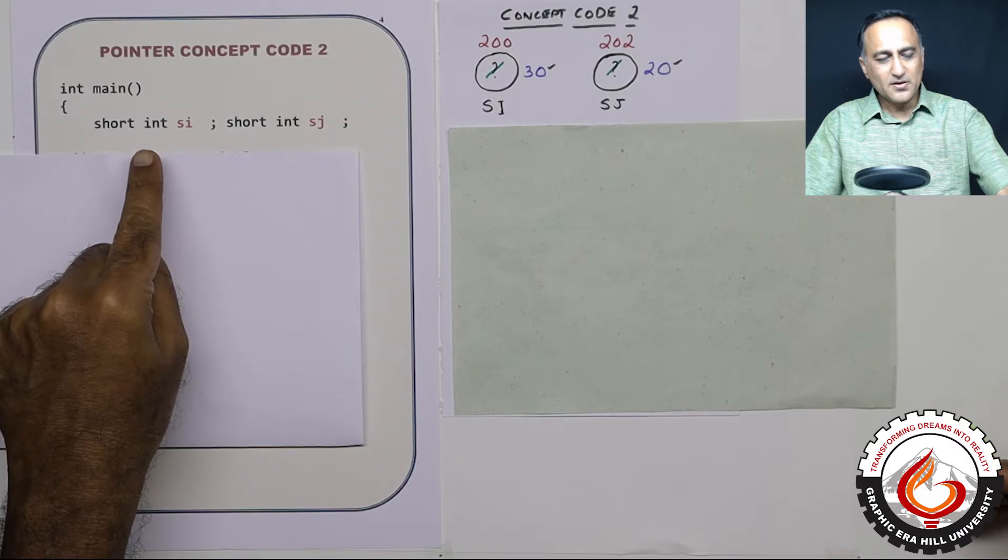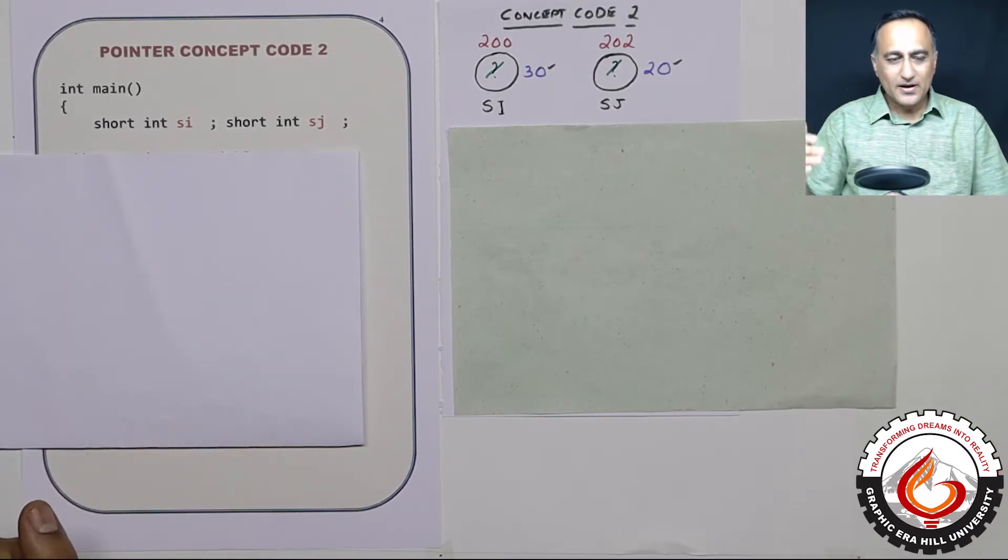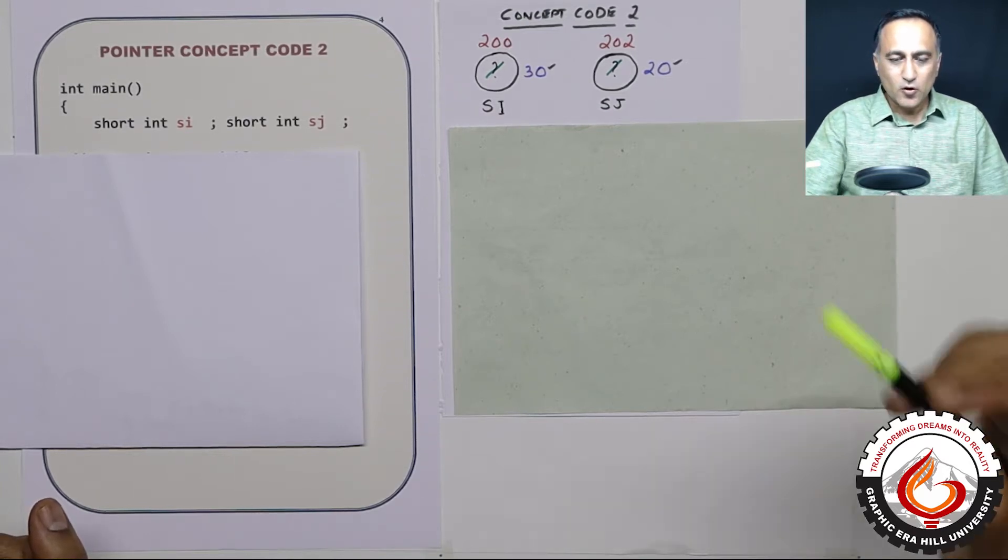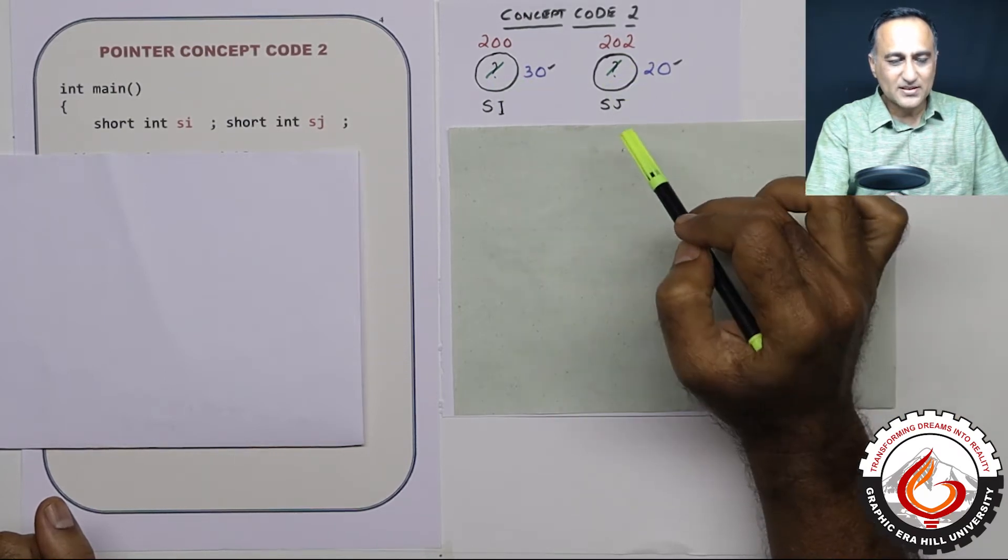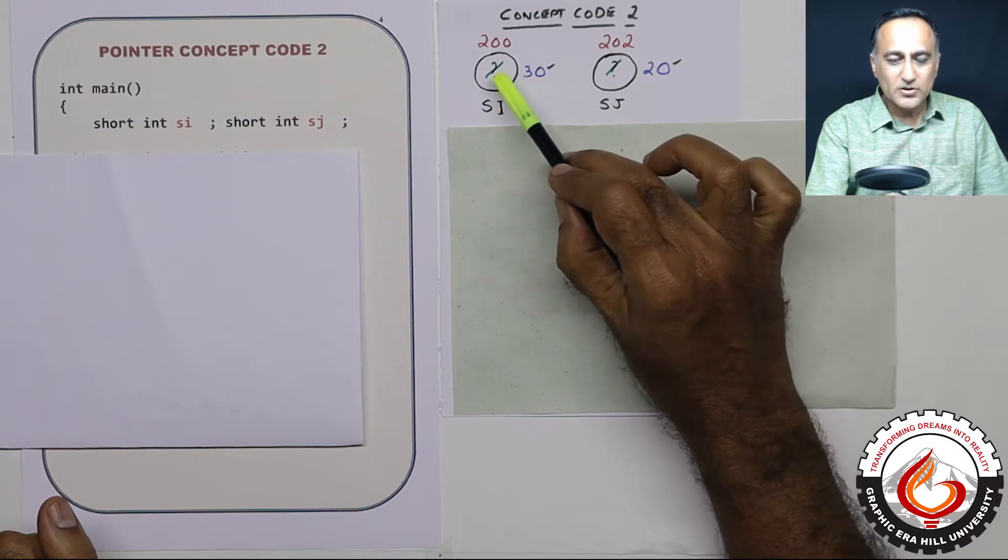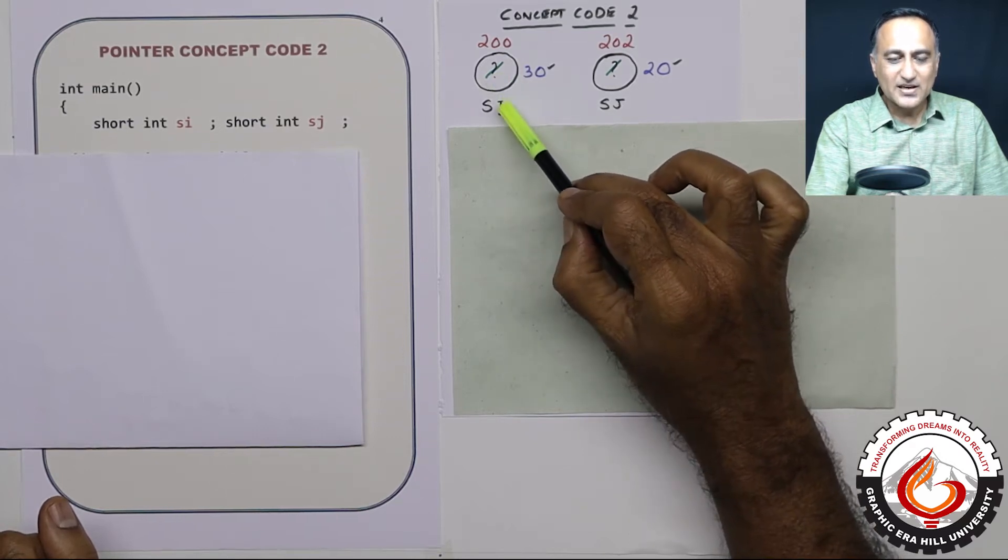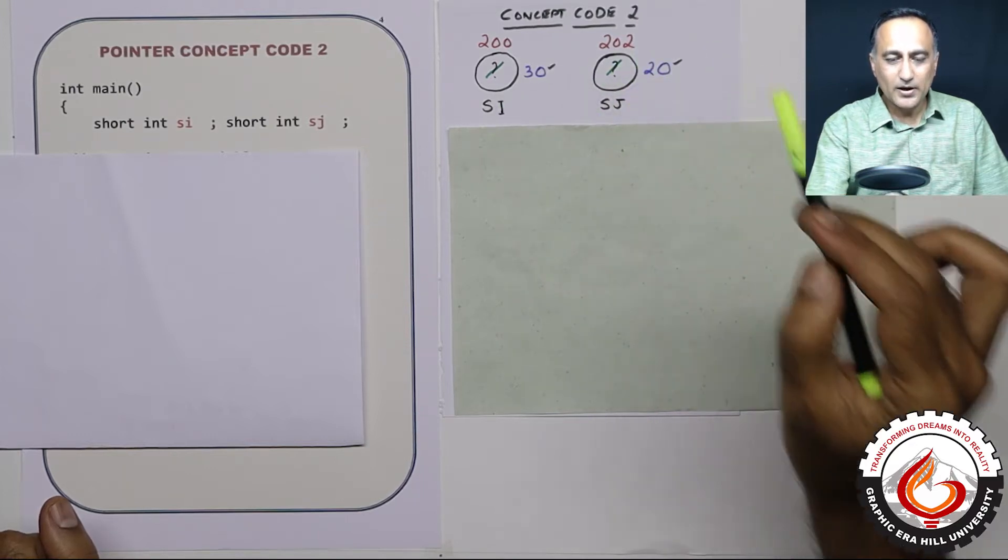I have an integer of the type short whose name is si. I have another short int whose name is sj. Conceptually, I am representing si with a circle and sj with another circle. Since I have not given them any initial values, question mark indicates si will contain some random value, and sj will contain some random or garbage value.